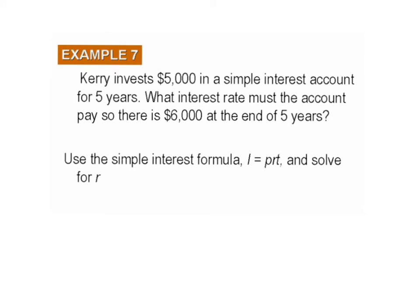Here's example seven. Kerry invests $5,000 in a simple interest account for five years. What interest rate must the account pay so there is $6,000 in it at the end of five years? So what they want to know now is interest rate. We take I equals PRT and divide both sides by PT. These cancel, and what we get is R equals I divided by PT.